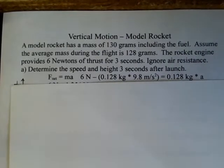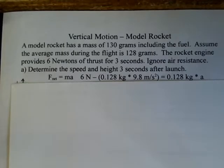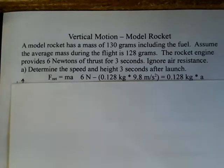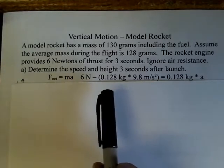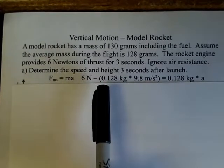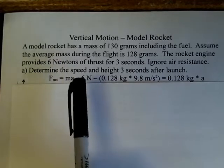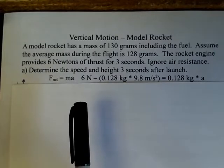For F equals MA, the situation is that there's plus six newtons of force from the rocket engine thrusting upward — that's a positive force on the rocket. But there's also the weight of the rocket downward. The acceleration due to gravity at Earth's surface is 9.8 meters per second squared, and weight equals mass times g. Notice that 128 grams must be converted to 0.128 kilograms, since the newton unit in F equals MA requires mass in kilograms.